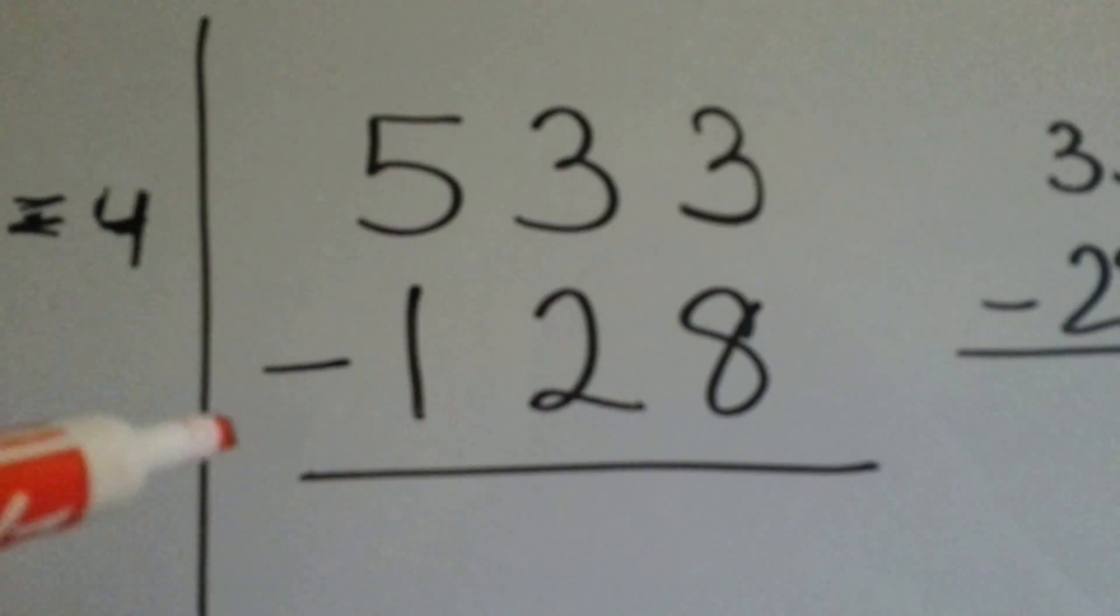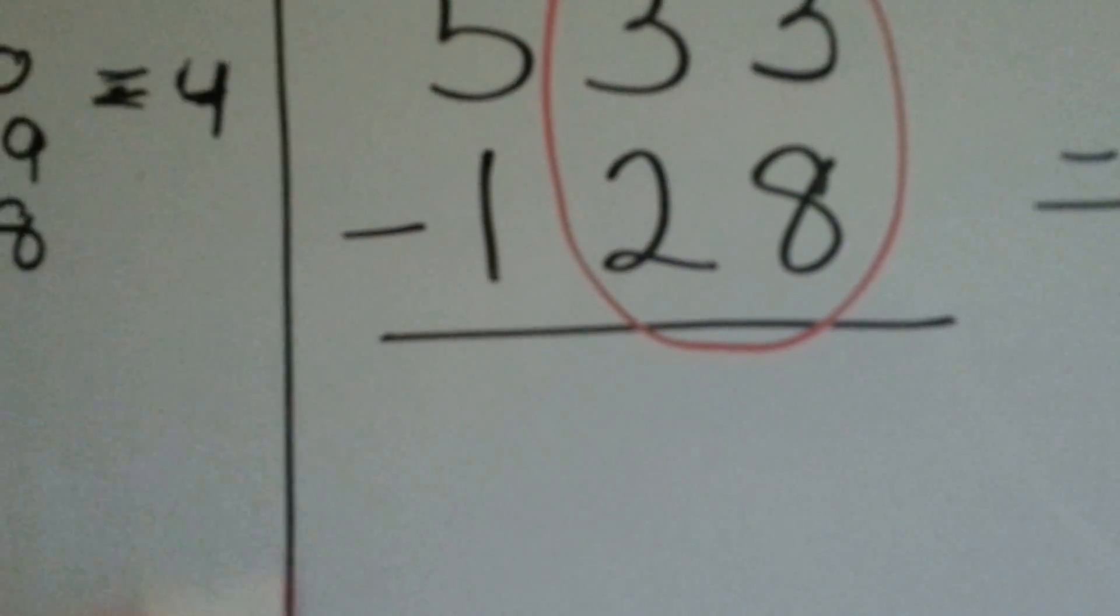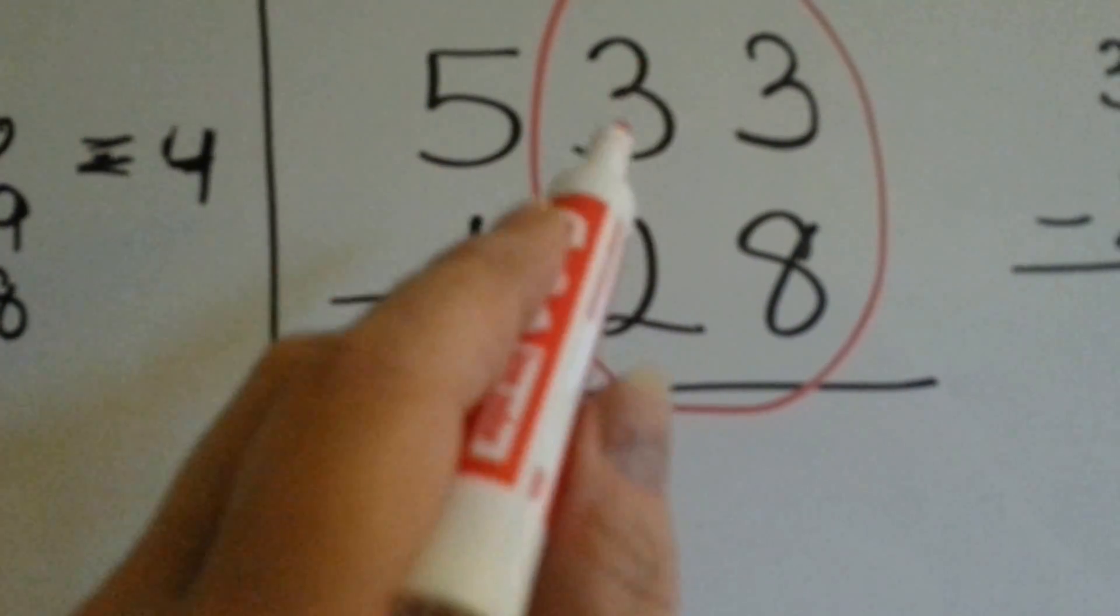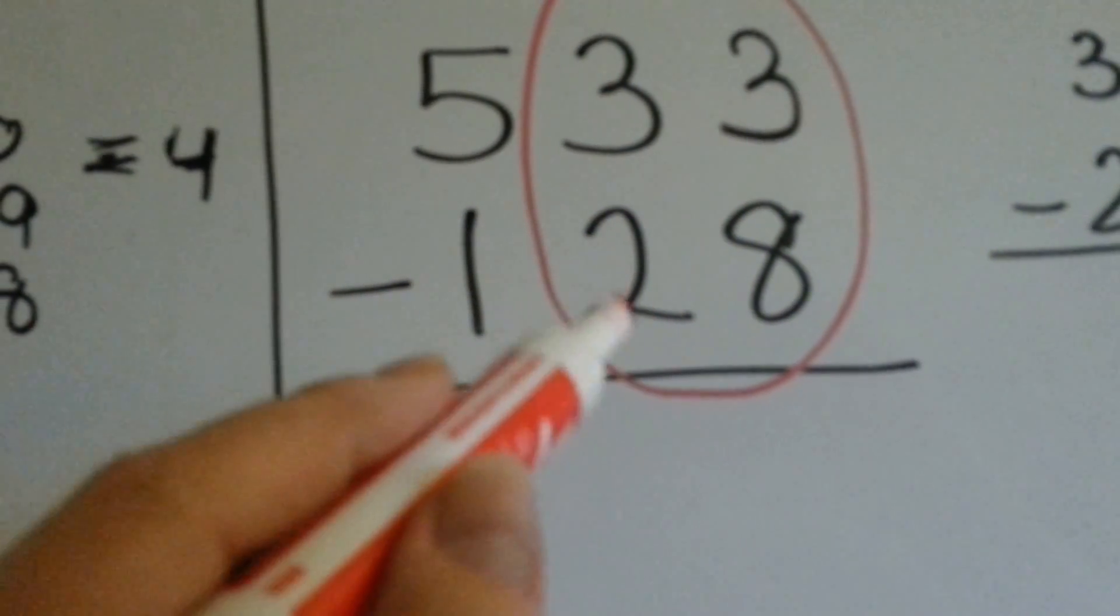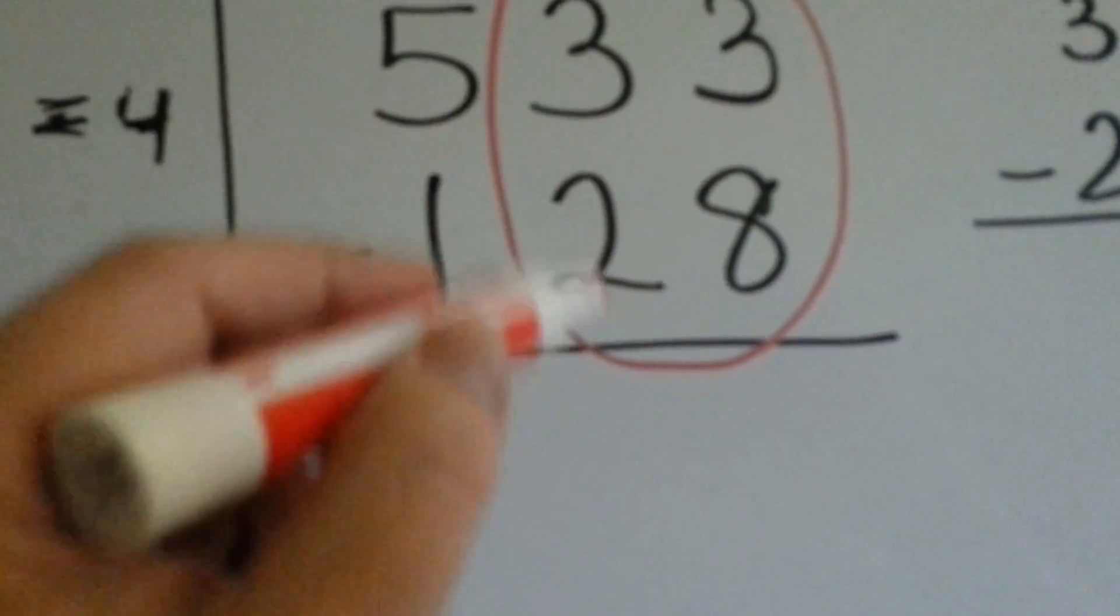533 minus 128. We're going to combine the tens and ones together so that we have 33 take away 28. Can you count up from 28 to 33 to see what the difference is between these two?